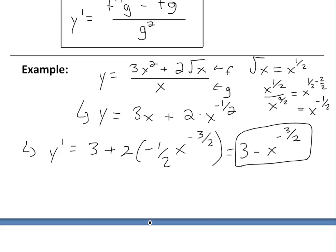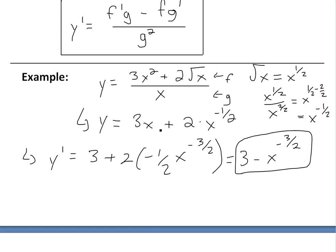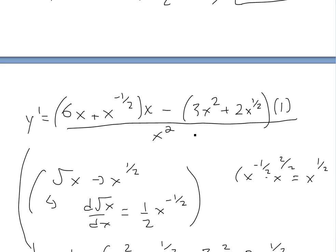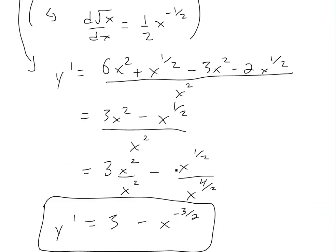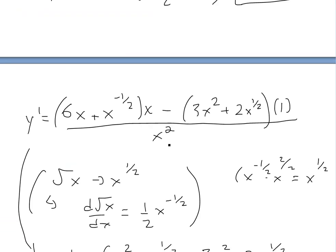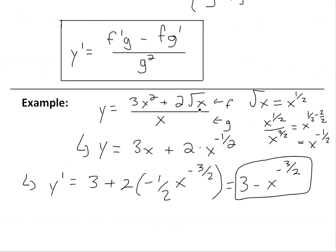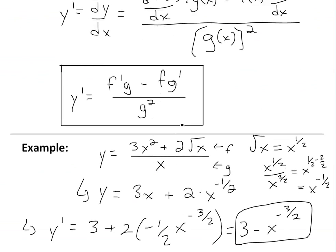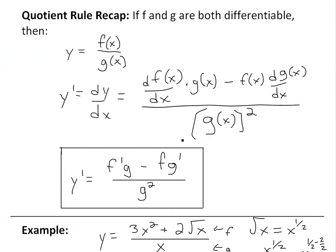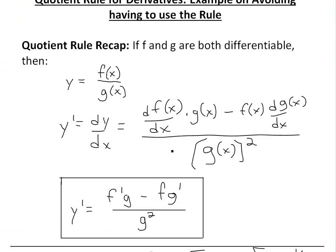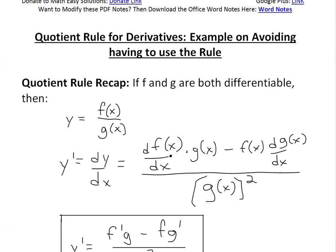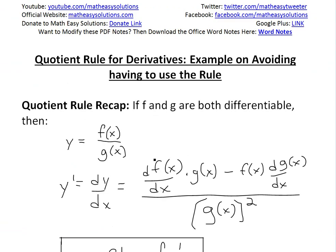It's much easier if you simplify first instead of later, as you can see from all the work just put into the quotient rule approach. Anyway, that's all for today. Hopefully you learned from this example — you can also download these exact notes in the Dropbox link below. Stay tuned for another Math Easy Solution.